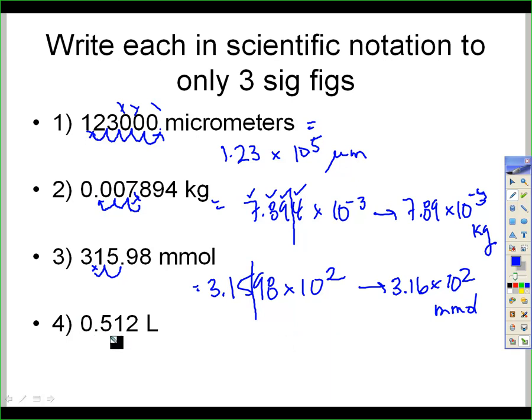Last one, scientific notation, 5.12 times 10 to the, in this case, 5.12 is much bigger than the original number, so we're going to have to divide by 10, which makes that a negative exponent. So I'm going to have to divide by 10 just once, so it'll be 5.12 times 10 to the negative 1. Since I don't really have any zeros to worry about in there, I already have 3 sig figs, so I'm good.